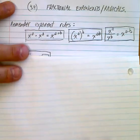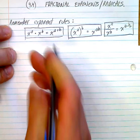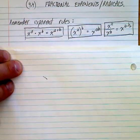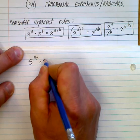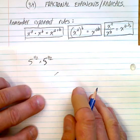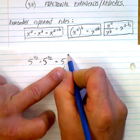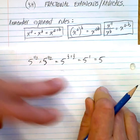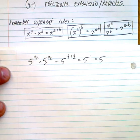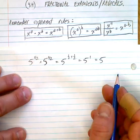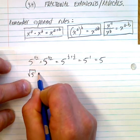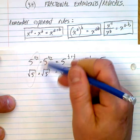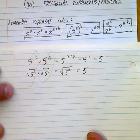Now, using that, I'd like you to think about this. If I said to you: what would 5 to the power of 1 half times 5 to the power of 1 half be? Hopefully you can see that that's 5 to the power of 1 half plus 1 half, which is 5 to the power of 1, which is just 5. Well, that makes me think — what else multiplied by itself would equal 5? It happens to be the square root of 5 times the square root of 5, which is the square root of 5 squared, which is 5.